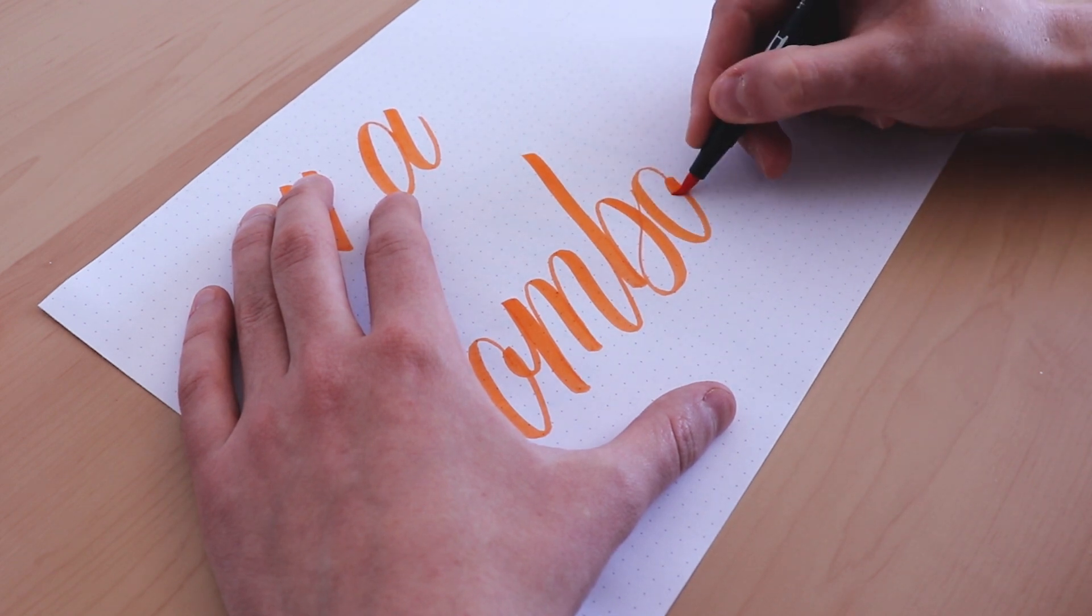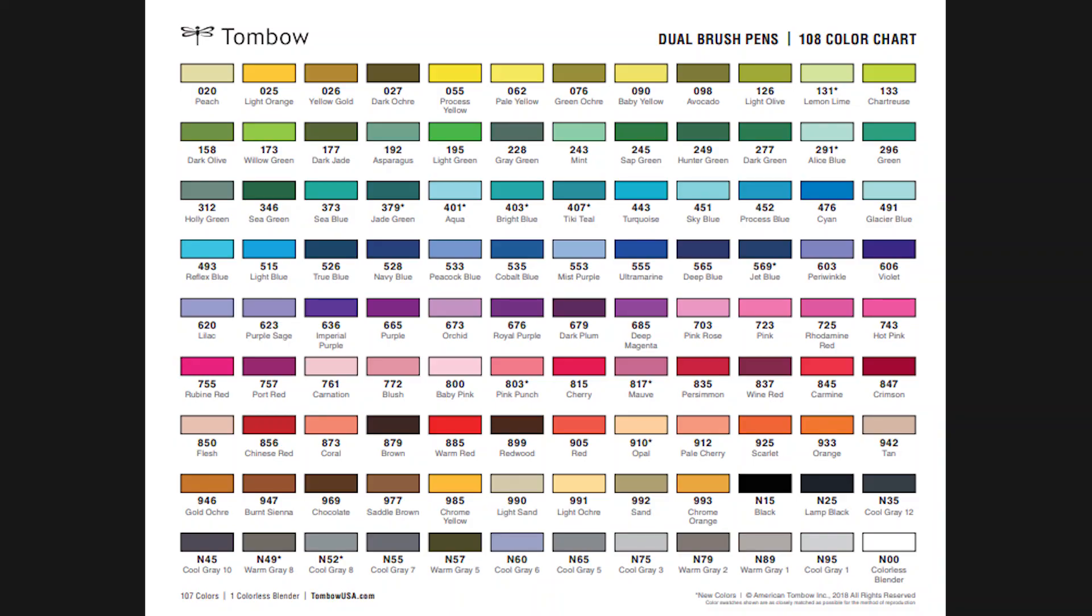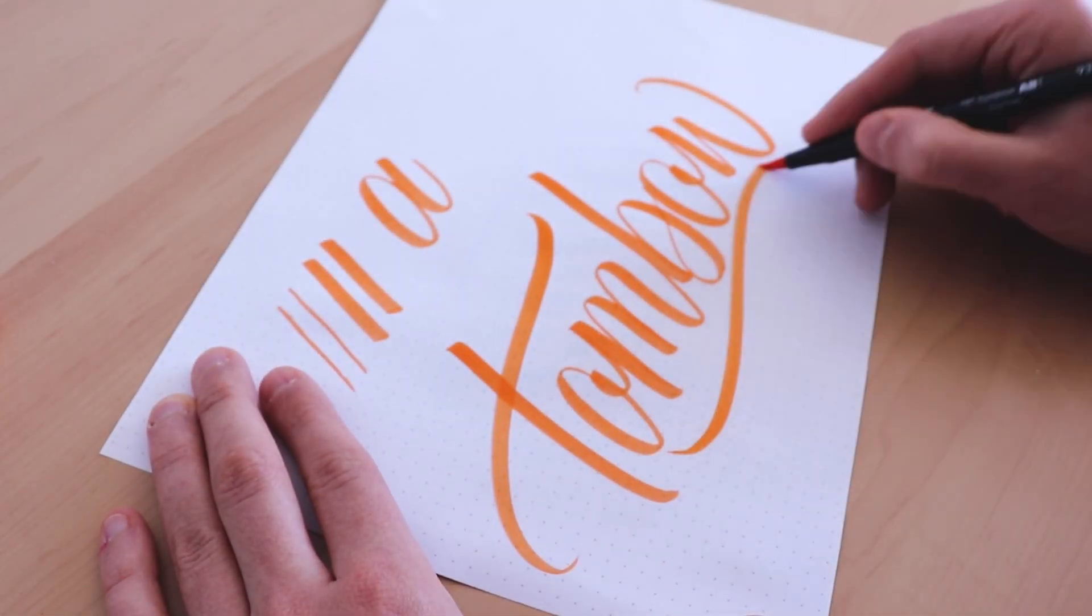As for color choice this is where the Tombow really shines. You will be able to find the Tombow Dual Brush Pen in a whopping 108 different colors.